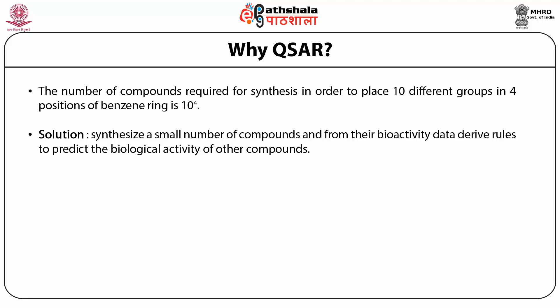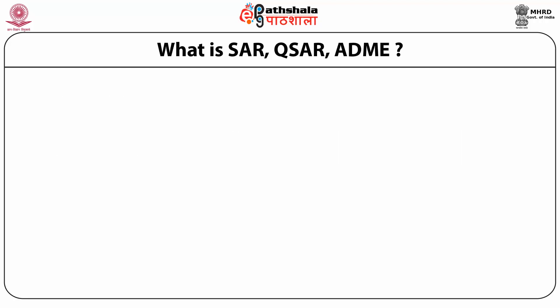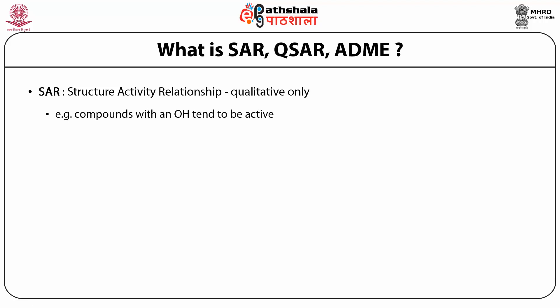QSAR and QSPR: QSAR is quantitative structure activity relationship and QSPR is quantitative structure properties relationship. There are two different bioactivities or activities concerned, however both deal with the same problem. The solution is almost similar. SAR is structure activity relationship and SPR is qualitatively structure and properties prediction or properties relationship.